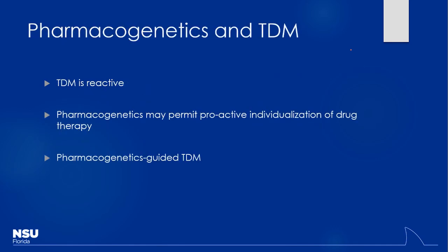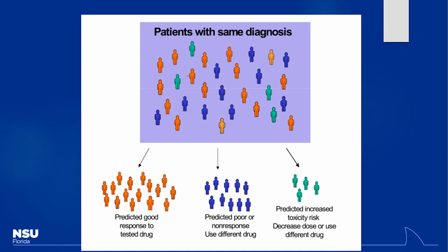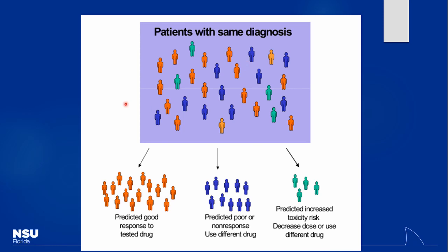Looking at pharmacogenetics versus TDM: TDM is more reactive — we start a patient on a dose we think is appropriate, get levels at steady state, then react. It would be nice to do things prospectively — based on patient characteristics, adjusting the dose beforehand. If you have a patient of a certain ethnicity or genetic profile, you might start at a different dose. Looking at a random patient population, you don't know who will be an over-responder, under-responder, or non-responder. Pharmacogenetic testing for specific polymorphisms can help identify good versus poor candidates for a drug.